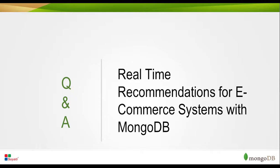The next question: how does MongoDB distribute data across shards? Sharding must be specifically enabled on a collection. After enabling sharding, MongoDB assigns various ranges of a collection's data to different shards in the cluster. The cluster automatically corrects imbalances between shards by migrating ranges of data from one shard to another.